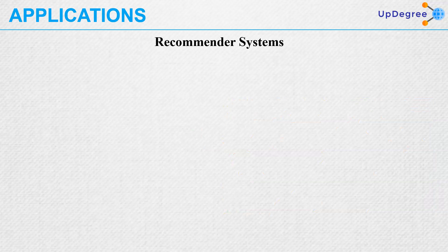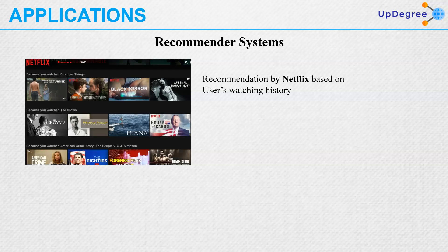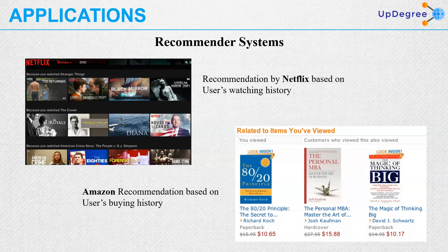Then comes recommender systems. This is the Netflix recommendation system. We have also seen recommendation systems in Amazon or Flipkart-like websites. A recommendation system will recommend you some products or things based on your past history.